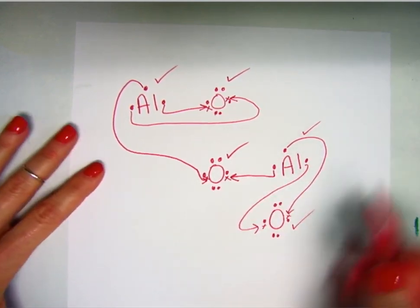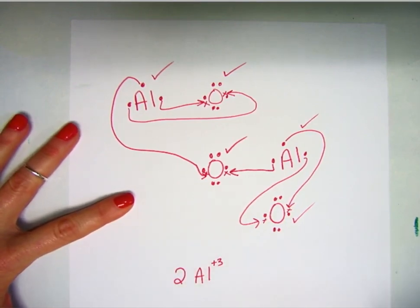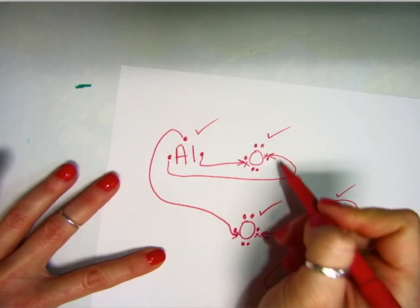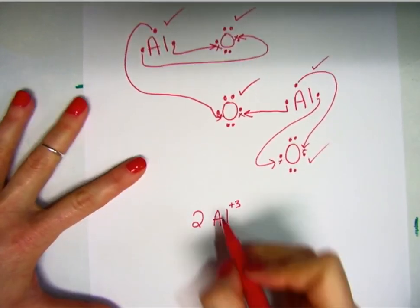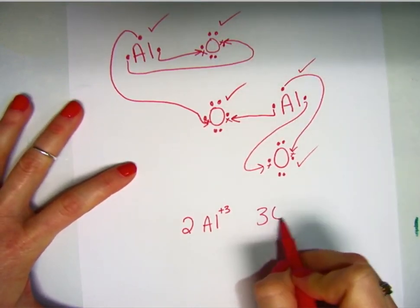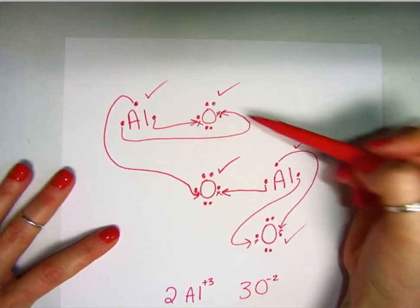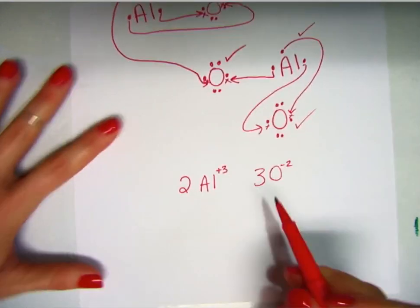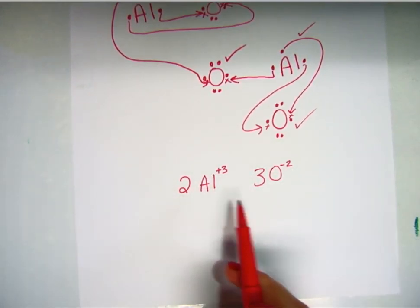So when we look at that, we ended up with two aluminum plus three ions. Each gave away three electrons, and there were two of them in total. And then we ended up with three oxygen ions, which each had a negative two charge because they each gained two electrons. So we ended up with two aluminums and three oxygens.